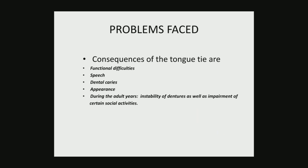The problems faced with ankyloglossia include functional difficulties, because the tongue plays a very important role in mastication and deglutition. It helps saliva to be mixed with food during the masticatory process, so when movement is restricted it results in functional difficulty. Next is speech problems — for phonation, tongue movement plays a very important role in pronunciation, and when the tongue is restricted it results in speech difficulties.